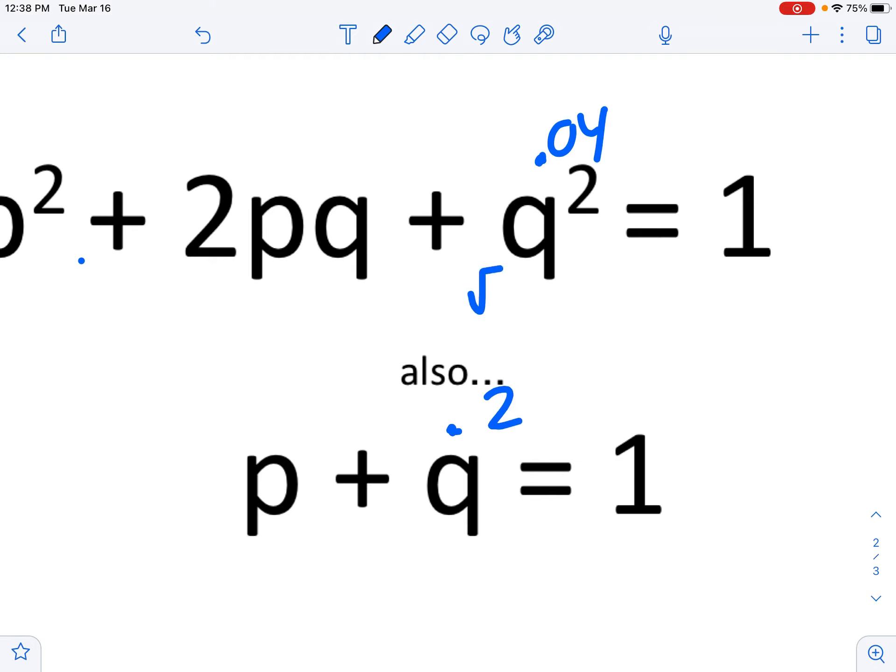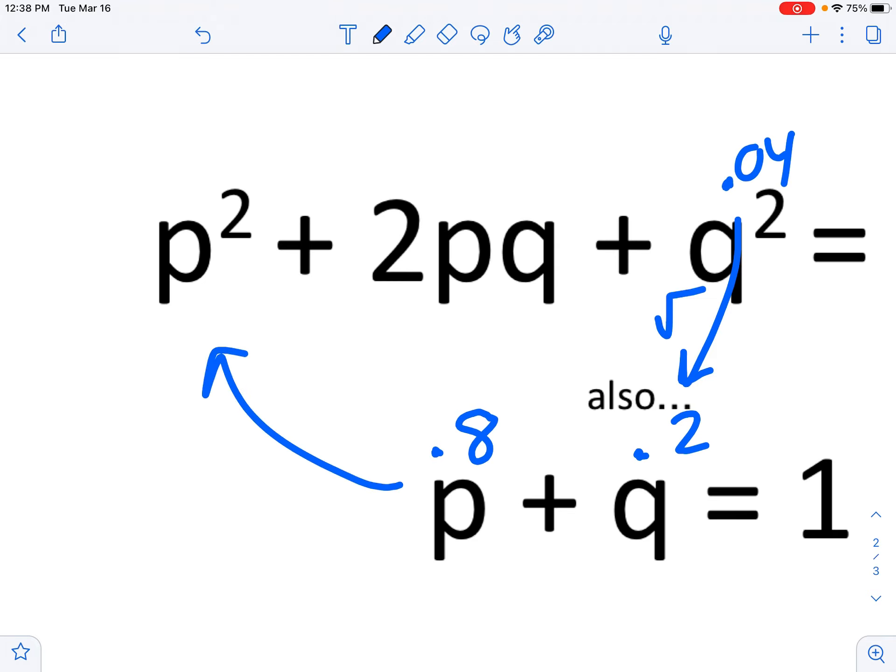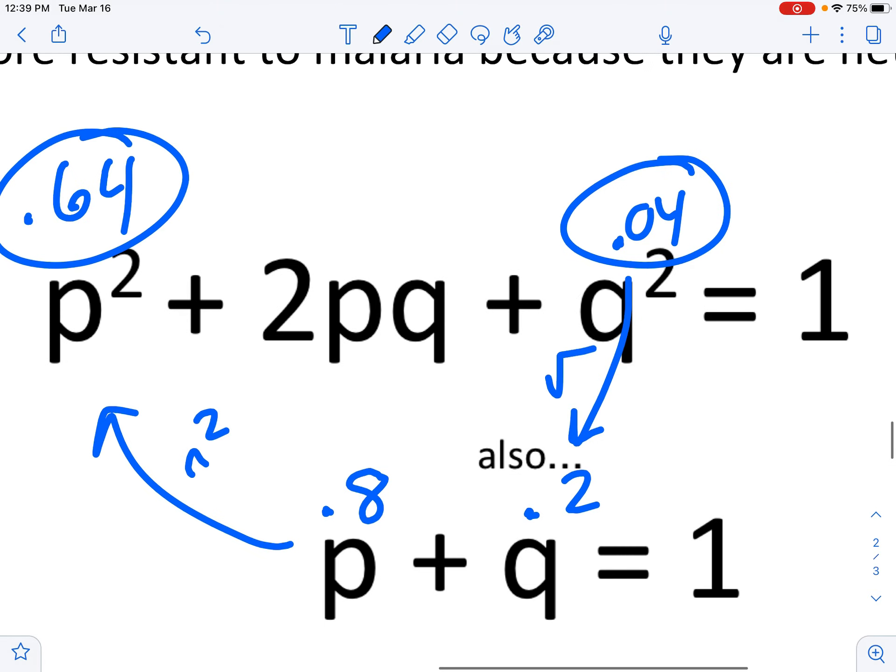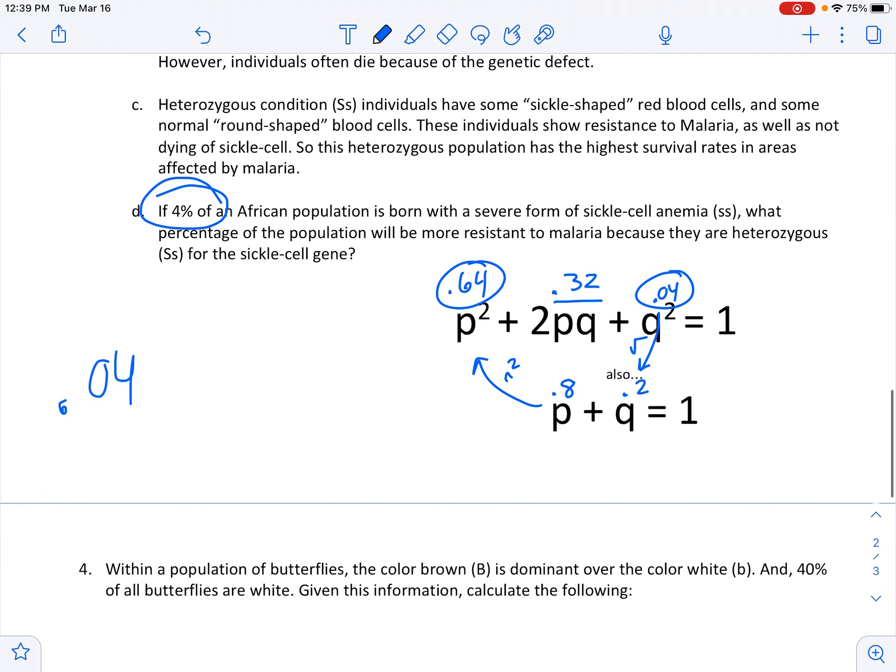So basically took the square root of it. And then what's p? P must be 0.8. Okay. And then what's p²? So square 0.8 - 0.8 times 0.8 is 0.64. And then 0.64 plus 0.04 equals 0.68, so this must be 0.32, and then that all equals 1. I hope I did that right. So that's the answer to the question.